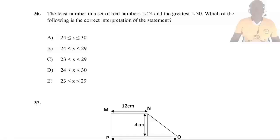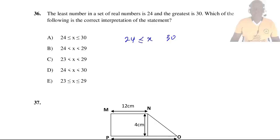Question 36: The least number in a set of real numbers is 24 and the greatest is 30. Which of the following is the correct interpretation? The remaining numbers lie between 24 and 30, meaning S is greater than or equal to 24 and less than or equal to 30. So the answer is A.